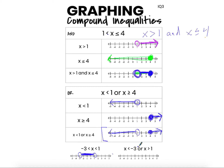For an OR inequality, we simply graph separately: open dot at negative 3 for x is less than negative 3, or open circle at 1 for x is greater than 1, with arrows extending outward in each direction.